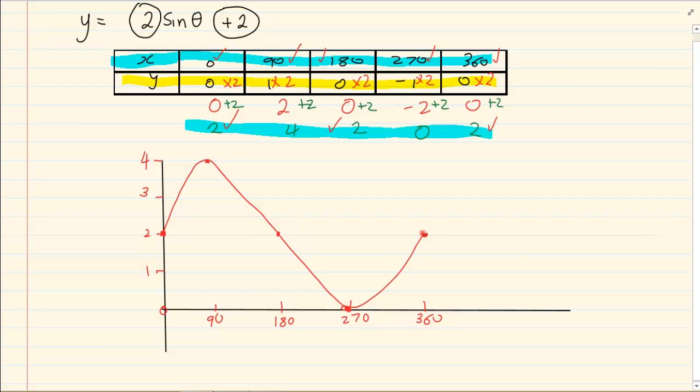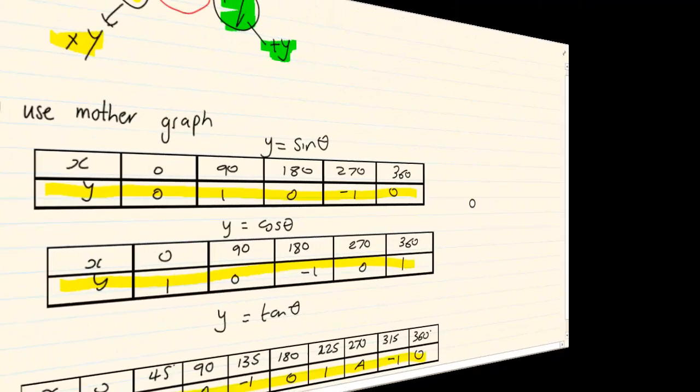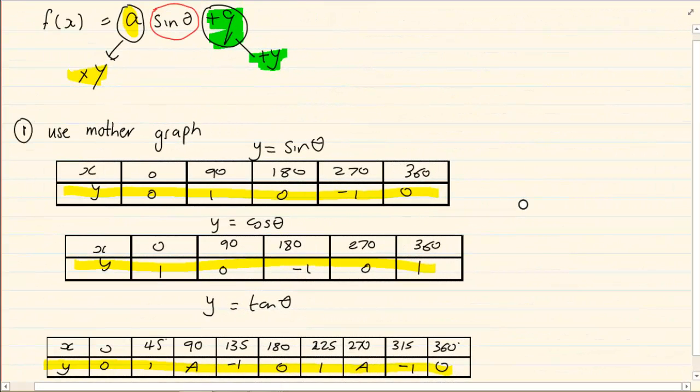When you are doing graphs, when we are busy with a, we are multiplying with y. But when we are busy with q, we are adding to y.